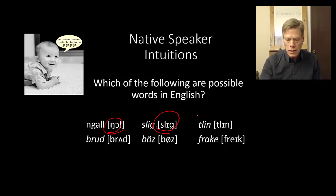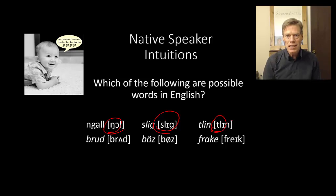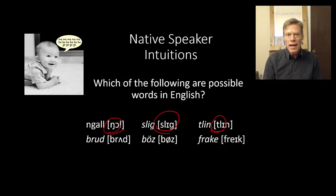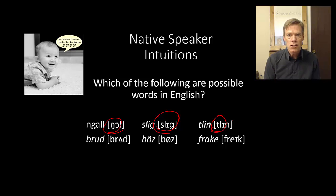But a word like tlin is not. The reason is because of that tl right next to each other at the beginning of a syllable — that voiceless alveolar stop immediately followed by a voiced alveolar lateral liquid just doesn't happen. There seems to be a phonotactic constraint against that. And in fact, we also don't get a voiced alveolar stop immediately before l either, so we wouldn't get glinn either. They're not hard to pronounce; they're just not part of English. Our phonotactics forbid it.